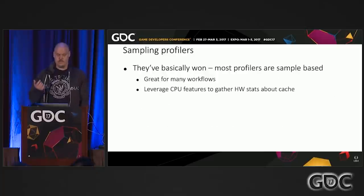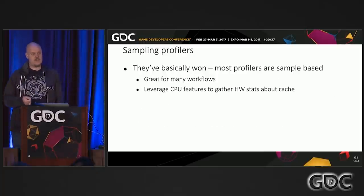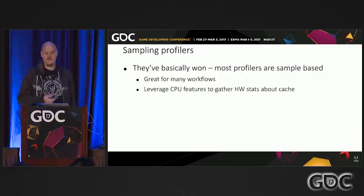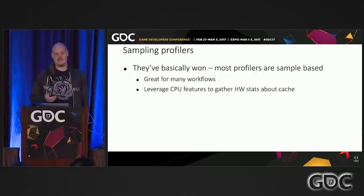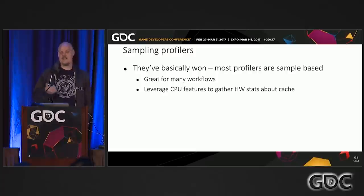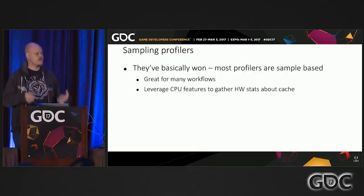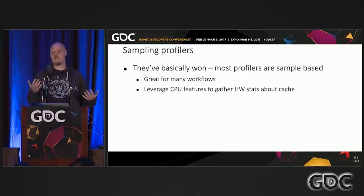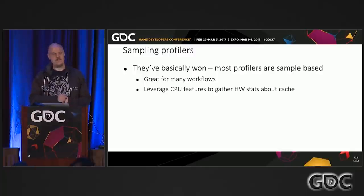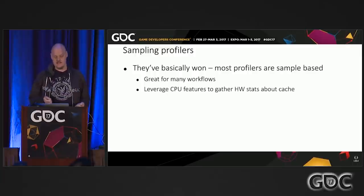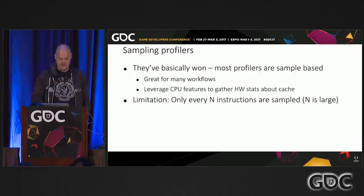If you're doing anything like this, you're probably using a sampling profiler, because they basically won. Something happened 10 years ago and everything else just disappeared. They're non-intrusive — you can just run them and they tell you with a pretty good guess about what's going on. They can also give you hardware statistics like the number of cache misses, and they use hardware statistics to do so, so they're actually pretty accurate.